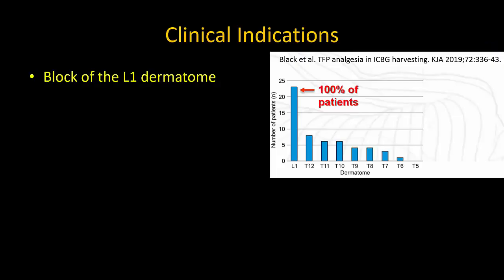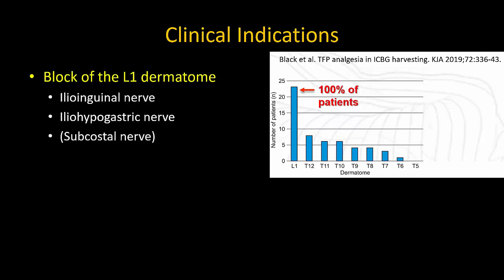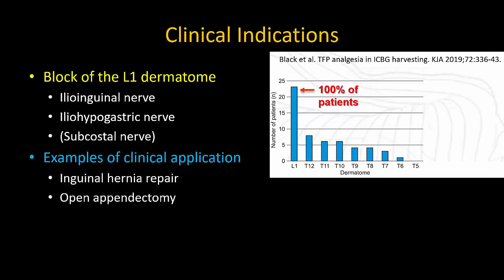The transversalis fascia block is a lower abdominal truncal block that targets L1 nerve branches, specifically the ilioinguinal and iliohypogastric nerve. Spread can also occur to the T12 subcostal nerve. It is a suitable analgesic option in any surgery within the L1 dermatome, including inguinal hernia repair and open appendectomy.